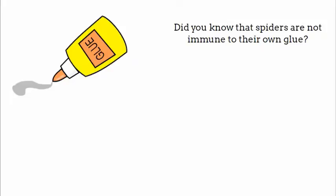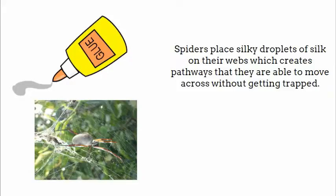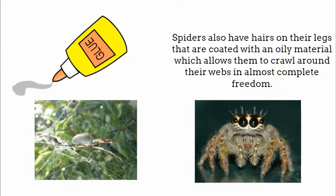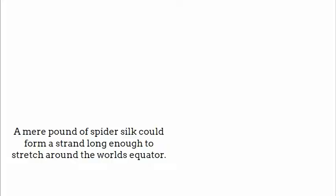Did you know that spiders are not immune to their own glue? Spiders place sticky droplets of silk on their webs which create pathways they are able to move across without getting trapped. Spiders also have hairs on their legs that are coated with an oily material, which allows them to crawl around their webs in almost complete freedom.